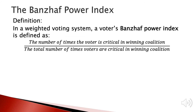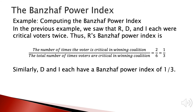We define the Banzhaf Power Index for a voter as the ratio of the number of times that voter is critical in a winning coalition to the total number of times any voter is critical across all winning coalitions. In the last example, R, D, and I were each critical twice. For R, the Banzhaf Power Index is 2 divided by 6 — the total critical count for all voters — giving 1/3. Similarly, D and I also have a Banzhaf Power Index of 1/3, meaning the voting power of all three voters is equal in this system.